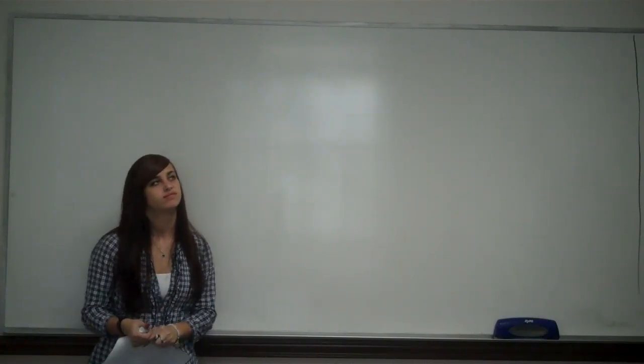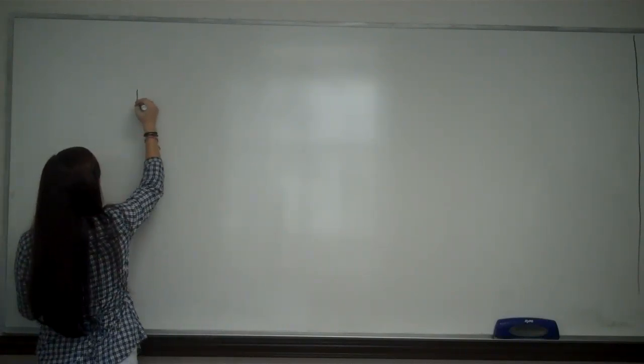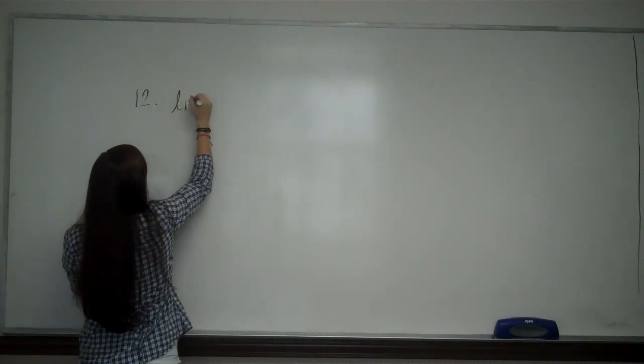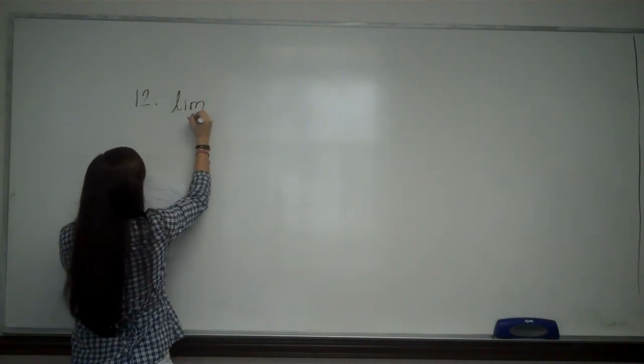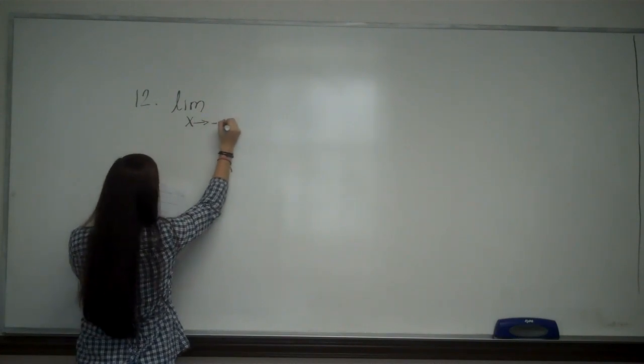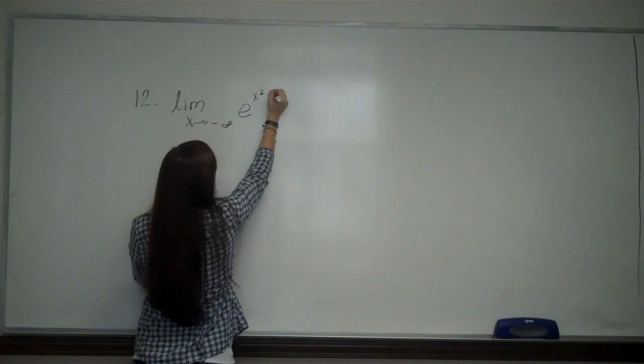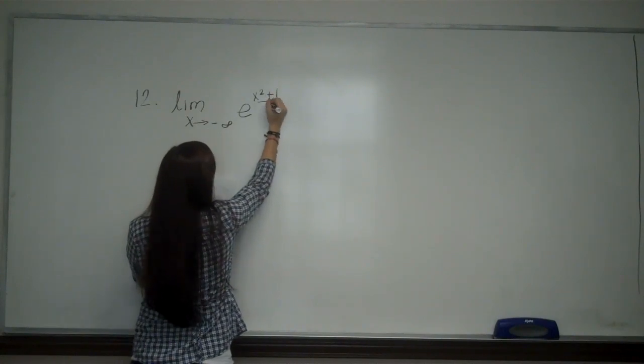Let's take a look at problem number 12. The problem says evaluate the limit as x approaches negative infinity of e to the x squared plus 1 over x.